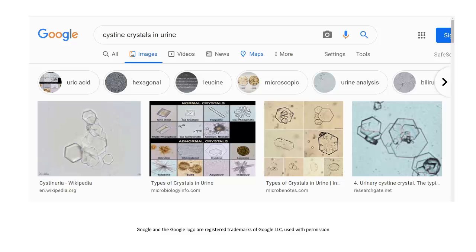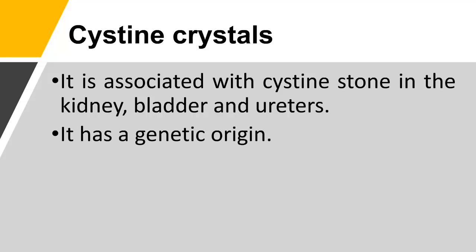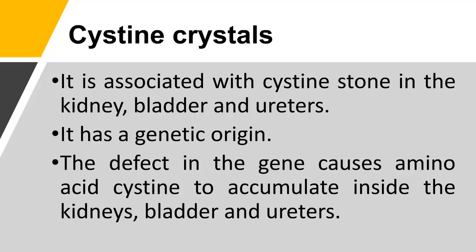Cystine crystals in urine are associated with cystine stones in the kidney, bladder, and ureters. They have a genetic origin — a defect in a gene causes the amino acid cystine to accumulate inside the kidneys, bladder, and ureters.